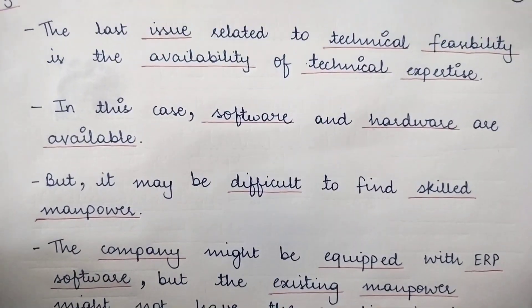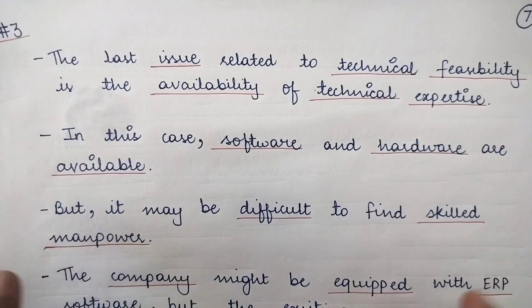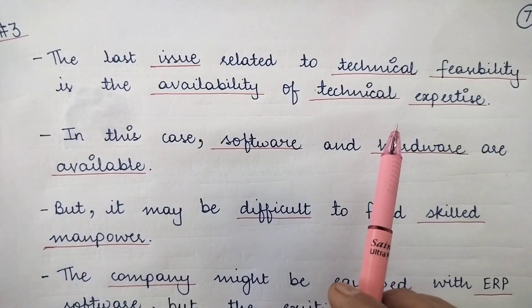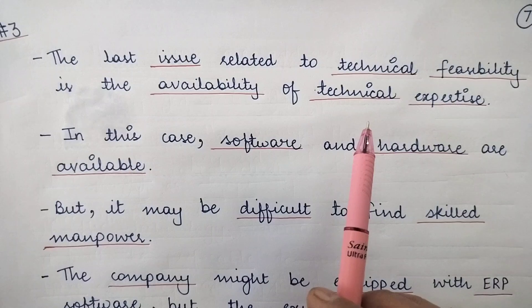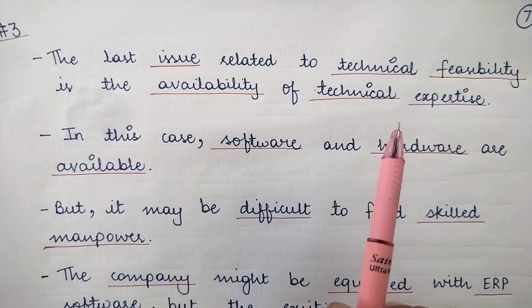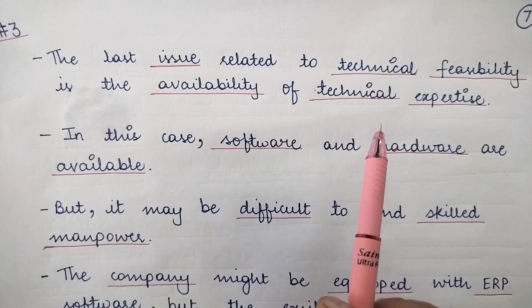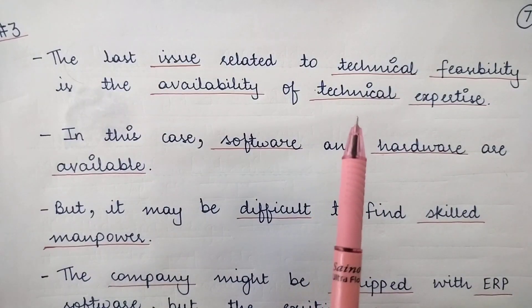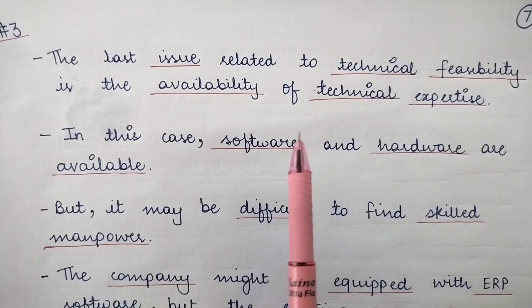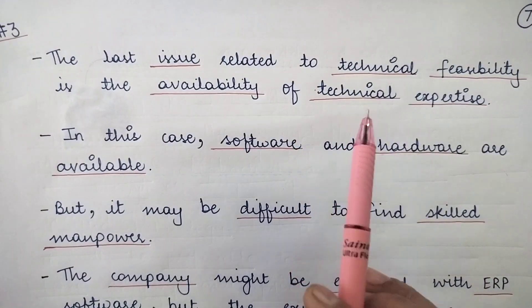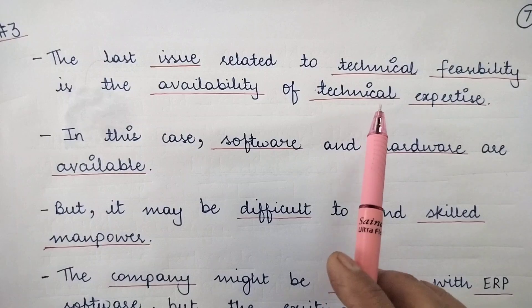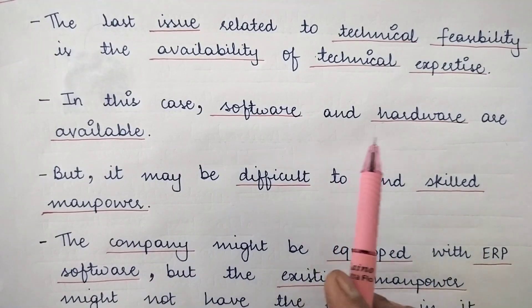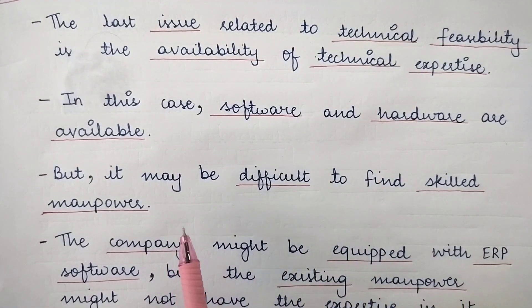The third thing considered in technical feasibility is the availability of technical expertise. Once you have determined the scope of the technology and ensured it is available with the client, it is finally the people or manpower who will be using that technology. If they are not trained to use it, the system cannot function. So it is important to ensure there is availability of technical expertise — people who are expert in using the technology. Software and hardware may be available, but it can be difficult to find skilled manpower.